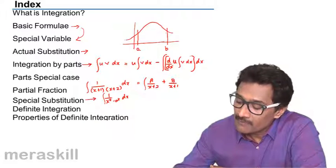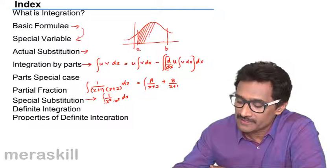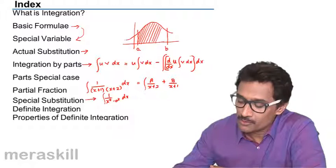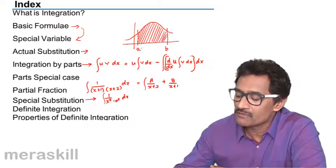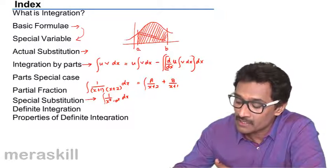then how do you find the area of it? So it's basically we have to use the same concept of integration along with coupling with some formulae associated with definite integration, and then substitute the value of b and a, and then hence we'll be able to find the area of the curve